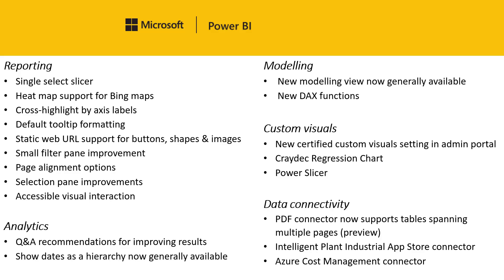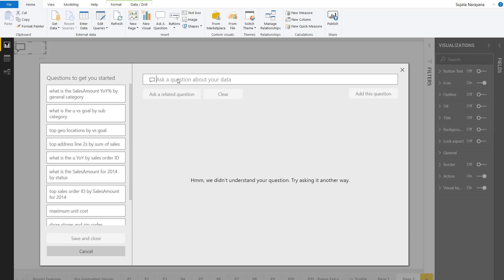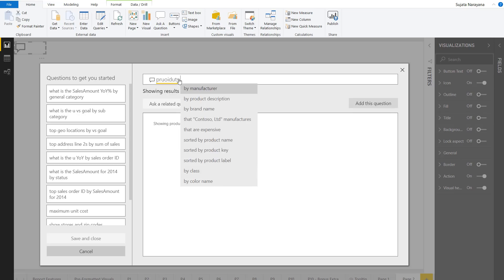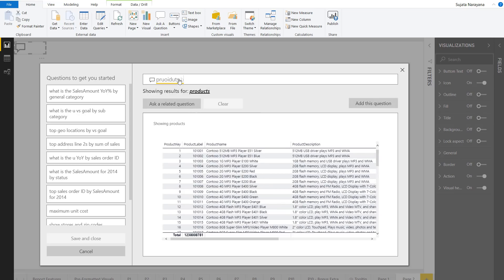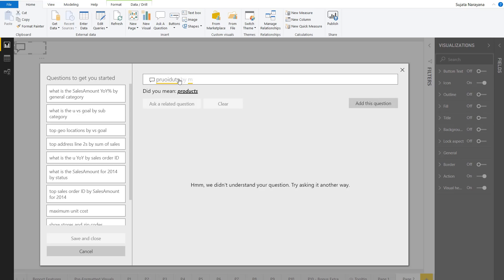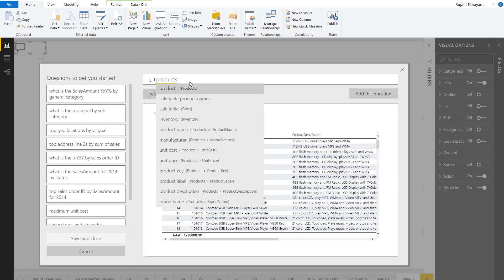Moving to the analytics section, first on our list we have some improvements to Q&A recommendations. The improvements help when there are misspellings or when ambiguity is introduced. In this example, I'm going to terribly misspell 'products' and see if Q&A is able to pick it up. It says 'did you mean products?' — yes, that was correct.